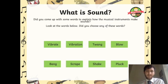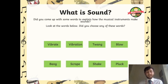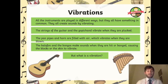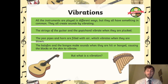Look at the words below and see if you chose any of these: vibrate, vibration, twang, blow, bang, scrape, shake, and pluck — like you're plucking the strings. This is all about vibrations. All the instruments are played in different ways, but they all have something in common: they all create sounds by vibrating. The strings of the guitar and the Gopichand vibrate when they are plucked. The pan pipes and horn are filled with air which vibrates when they are blown. The balafon and the bongos make sound when they are hit or banged, causing the blocks or the skin to vibrate.